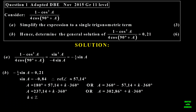Now, let's look at the first question. The first question is adapted from a November 2015 paper, and this is actually grade 11 level. So it can be assessed in grade 12, because it's based on trigonometric content taught in grade 11. The first one there, this one sort of helps you into the solution. First of all, you're given an expression, and then you have to simplify it, and then you have to use the simplified version and find the general solution of that specific equation.